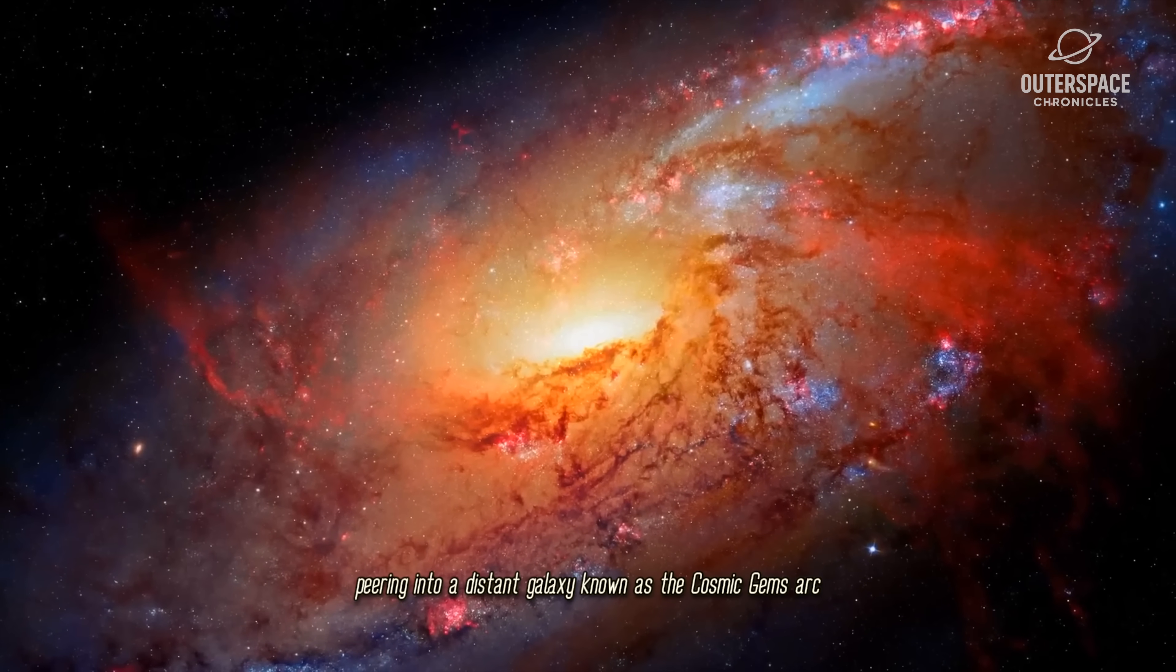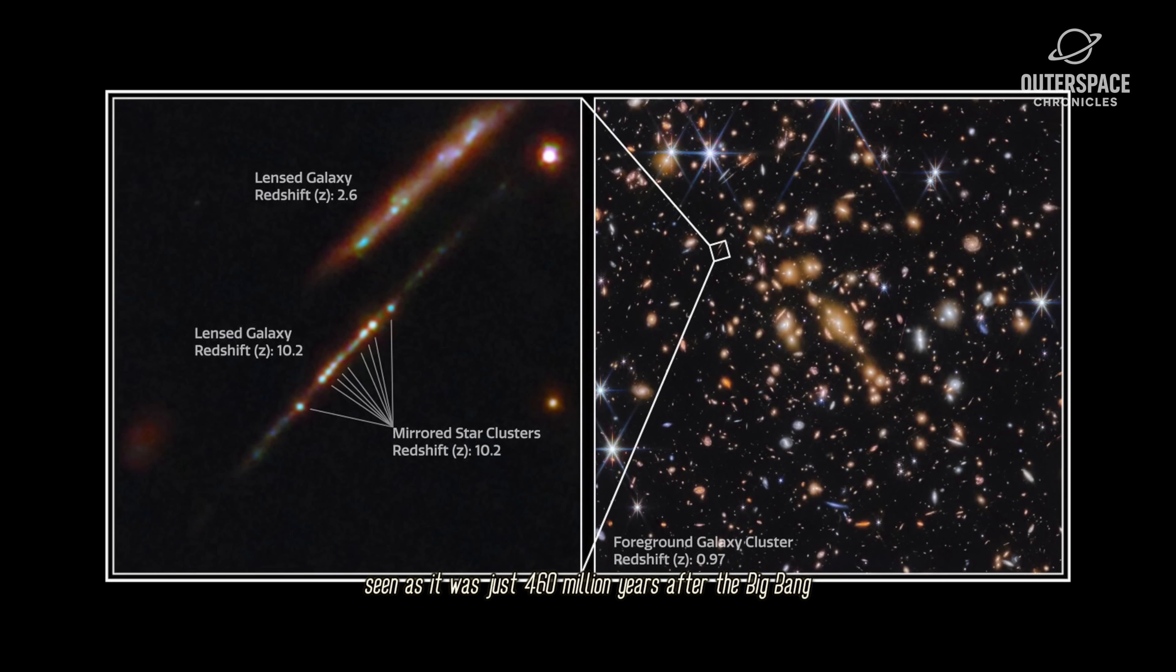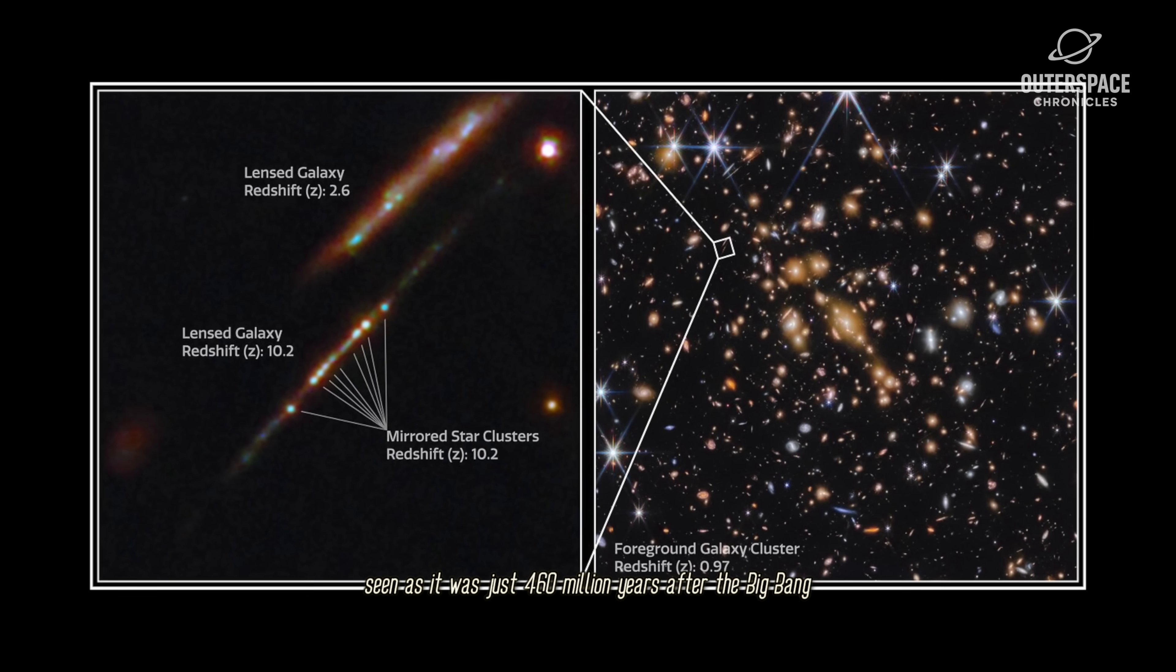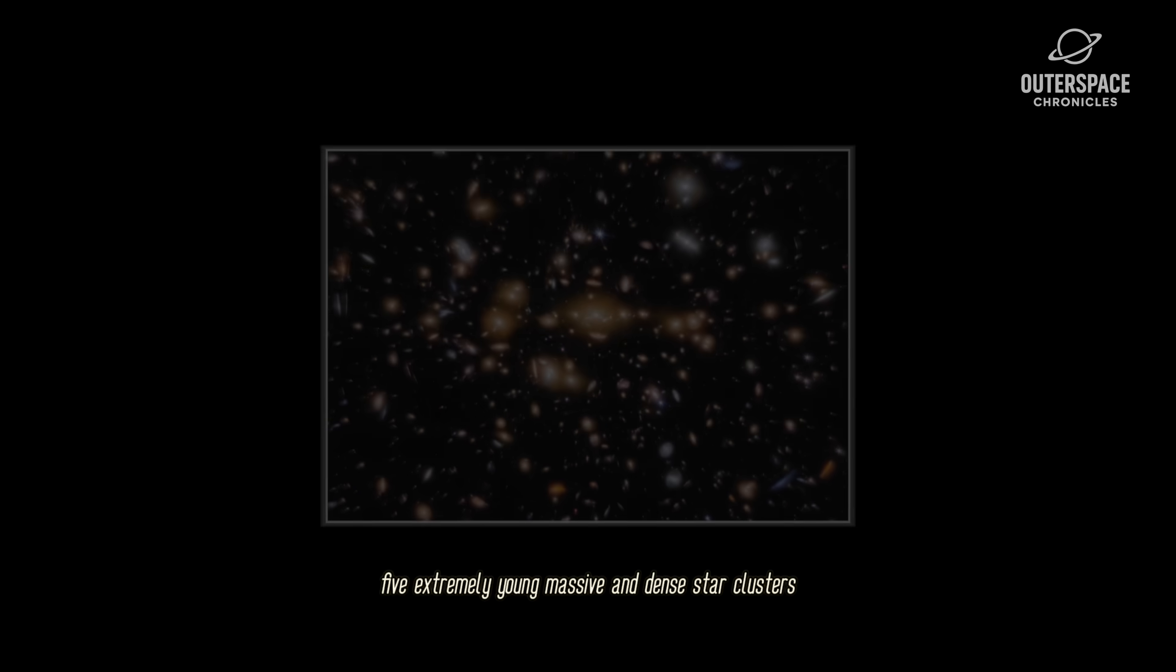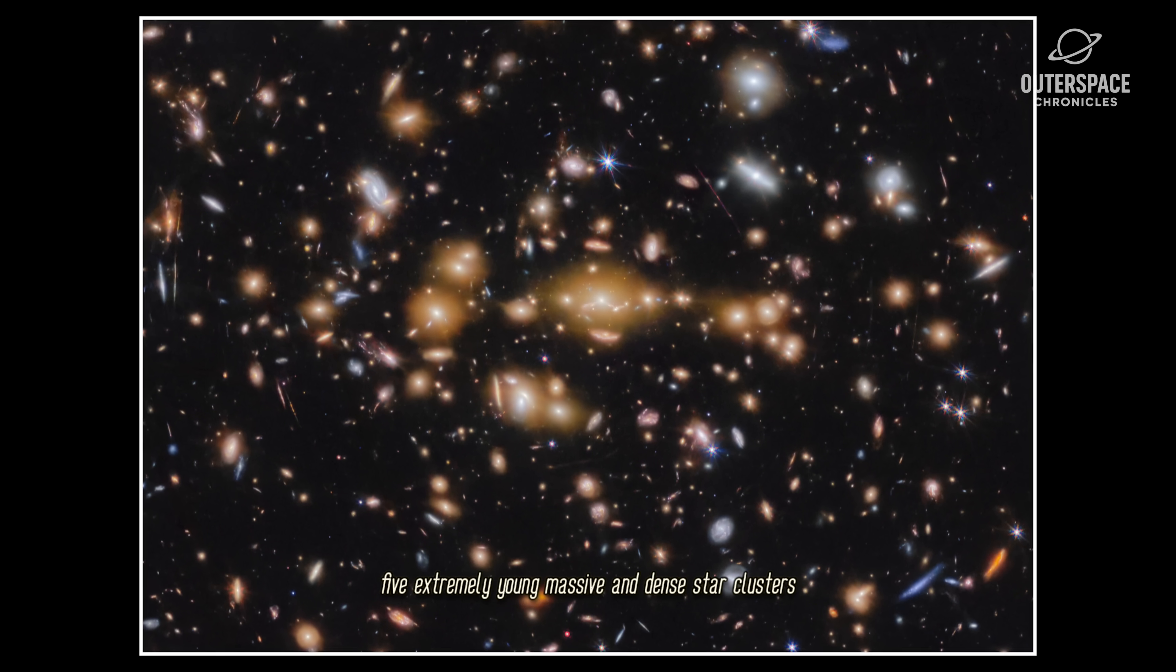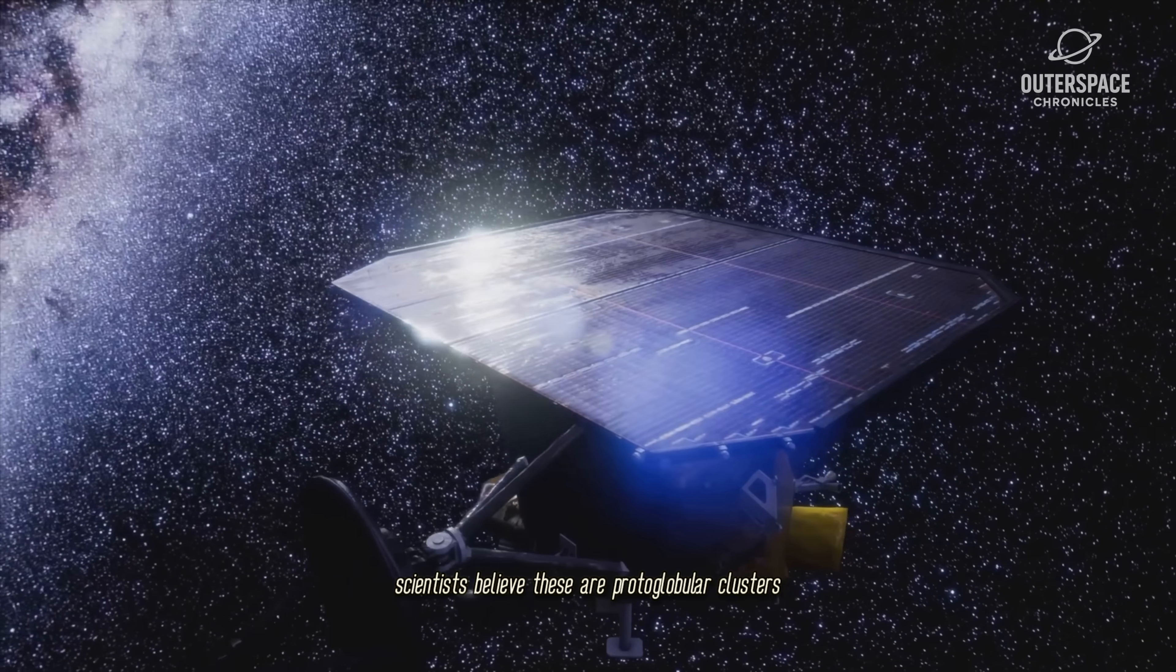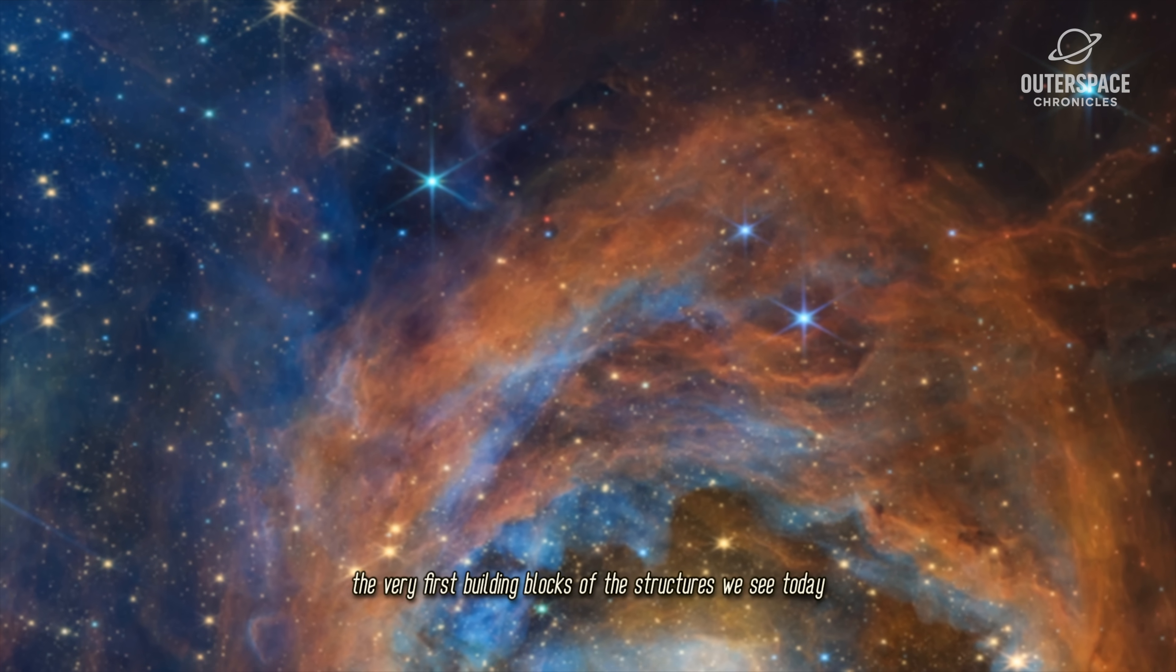Peering into a distant galaxy known as the cosmic gems arc, seen as it was just 460 million years after the Big Bang, Webb identified something astonishing. Five extremely young, massive, and dense star clusters. Scientists believe these are proto-globular clusters, the very first building blocks of the structures we see today.